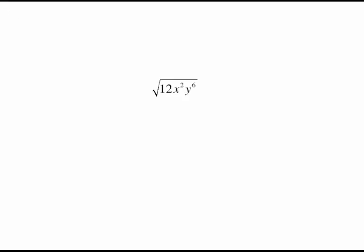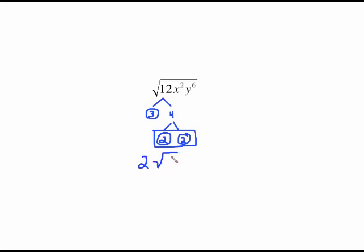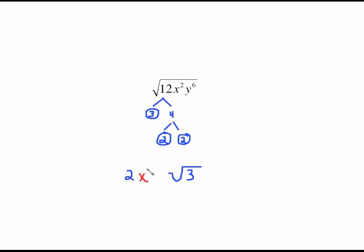Sometimes the coefficient is not a perfect square and we have to use a factor tree. The tree on 12 gives us 3 times 2 times 2. We have a pair of 2's, so a 2 comes out and a 3 stays in. I spread it out a bit because I know I'll have to deal with the variables next. Two goes into 2 once, giving us x to the first. Two goes into 6 three times, giving us y to the third.